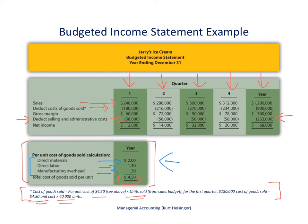The budgeted income statement is a culmination of many different budgets. We take the cost of goods sold amount, subtract it from sales revenue, and that gives us our projected gross margin — also called gross profit — for each quarter and for the year. Then we subtract selling and administrative costs from the gross margin. For the year, that's $300,000 gross margin minus $232,000, giving us our projected net income both quarterly and annually.